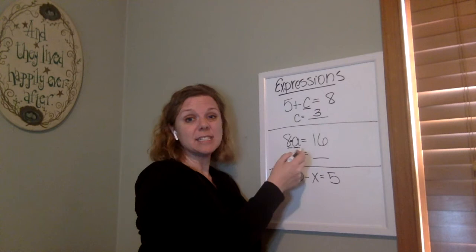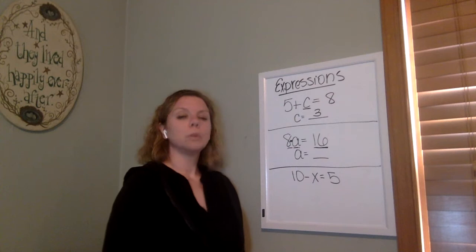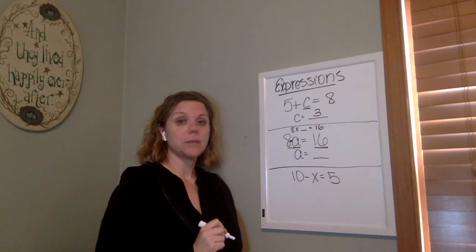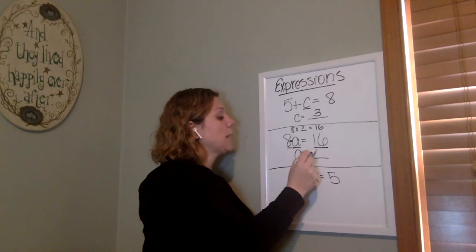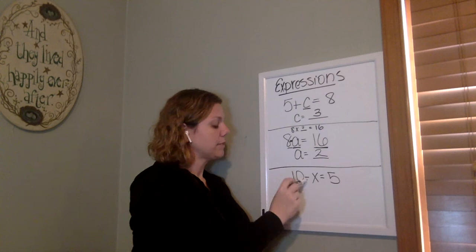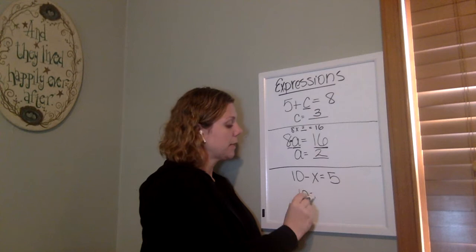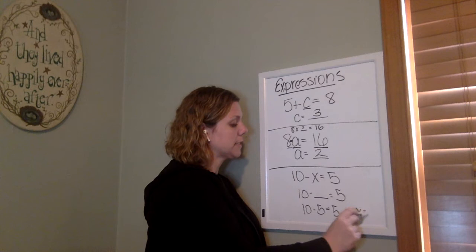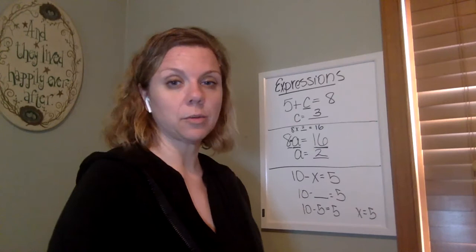So now I have eight a or eight times a or eight a's equals 16. So what do I need to do to figure that out? What's my unknown? Eight times blank equals 16 would be another way to think about it. So I know that eight times two equals 16. So a must equal two. Now down here, I have a subtraction. So 10 minus x equals 5. 10 minus what equals 5? If I work backwards, 5 plus 5 equals 10. And I know that 10 minus 5 equals 5. So x equals 5. Okay, we're going to take it a step further now.